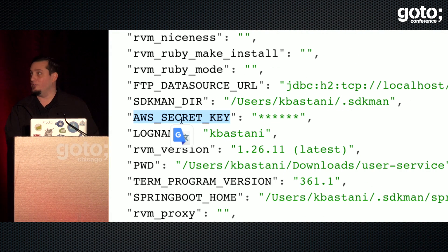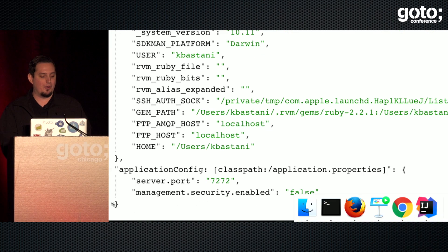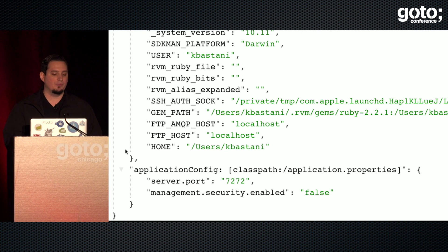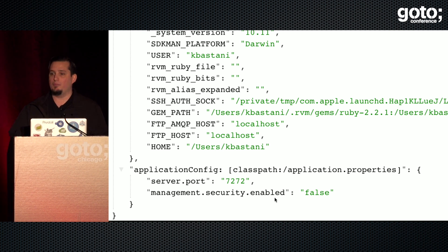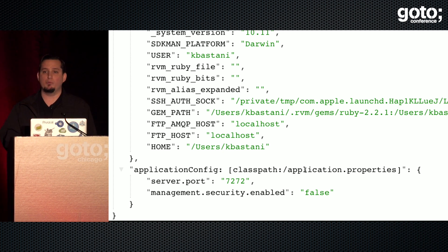This is probably what went wrong with the first demo — I had my AWS secret key in my demos, which I don't advise. At the very bottom of the env output, most importantly, is the application config block, where you see all the overridden configuration — the server port and the disabled security setting. In 12-factor applications you want to separate configuration from your build and put it in the remote environment. Spring Boot conforms to this — you can see the config comes from the application properties classpath, but you can also retrieve it from a remote configuration server.